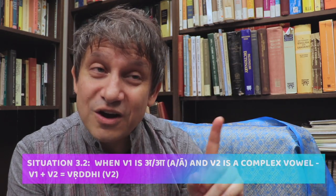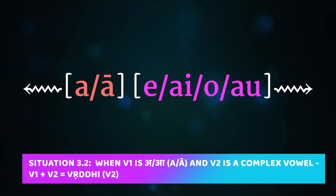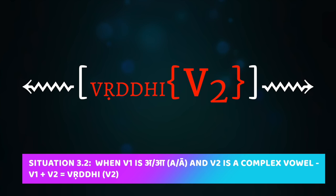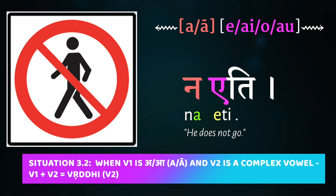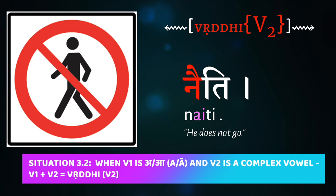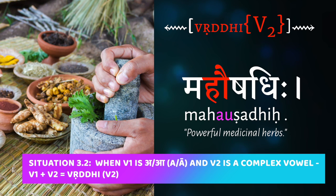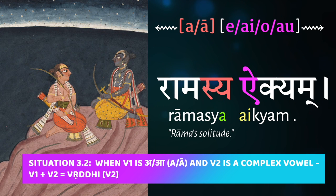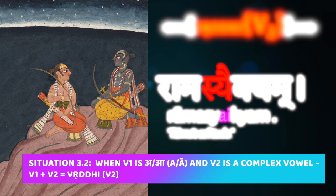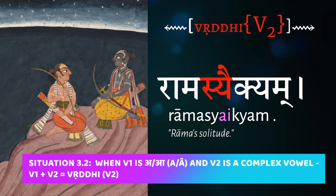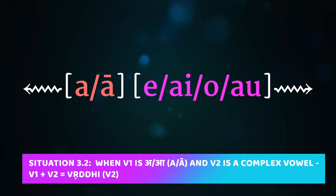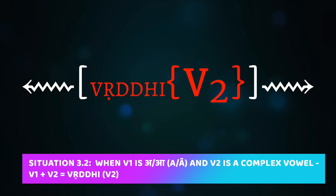When V2 is a complex vowel — meaning e, ai, or o — then a or ā forces that vowel to augment into its vṛddhi form. So na followed by eti becomes naiti, meaning 'he does not go.' Mahā followed by oṣadhiḥ becomes mahoṣadhiḥ, meaning 'the great medicine.' Rāmasya aikyam becomes rāmasyaikyam, meaning 'Rama is solitude.' These are the various situations when V1 is a or ā followed by a word-initial vowel V2.